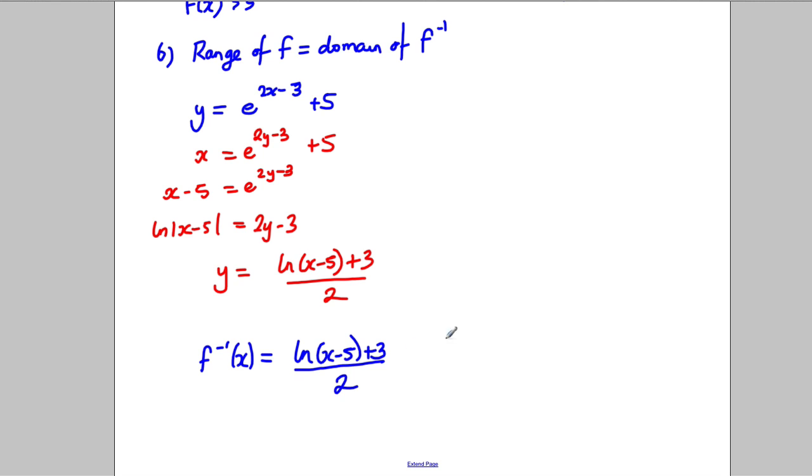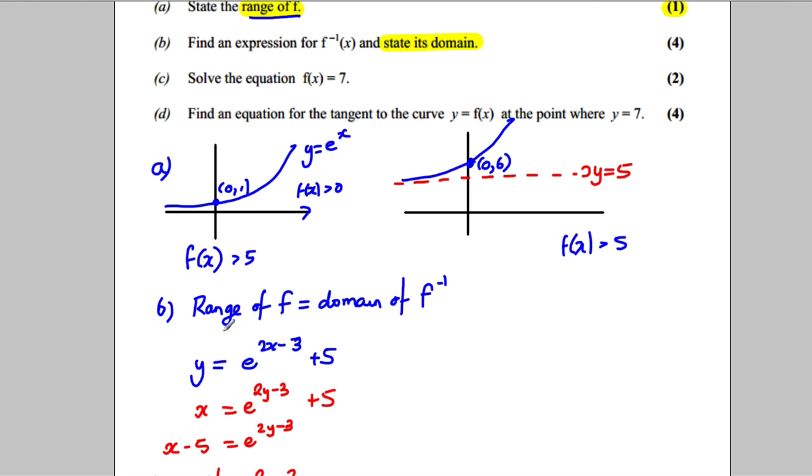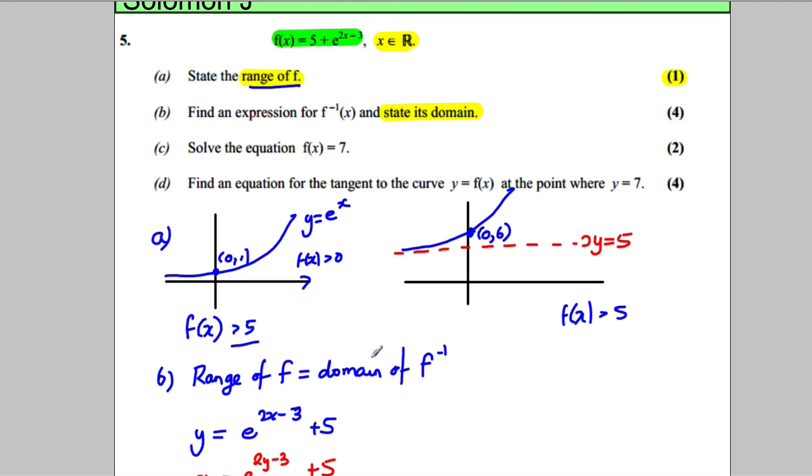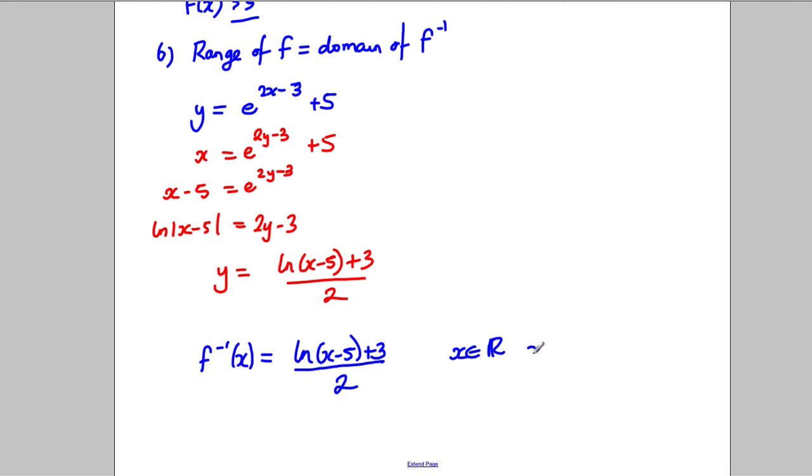Now the domain, well x can be a real number, we know that. But the domain is equal to the range of the original function and the range of the original function is bigger than 5. So therefore x is a real number and x is strictly bigger than 5 is our domain, which we've stated.